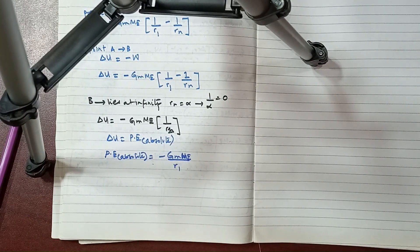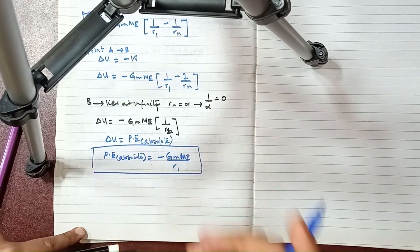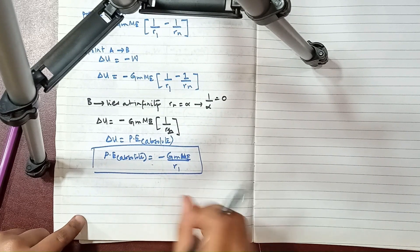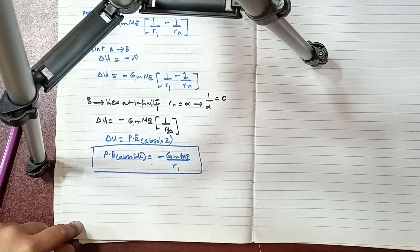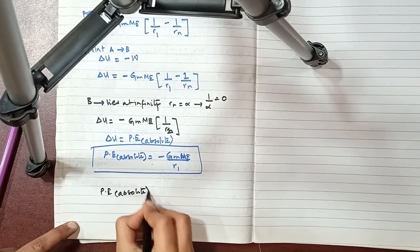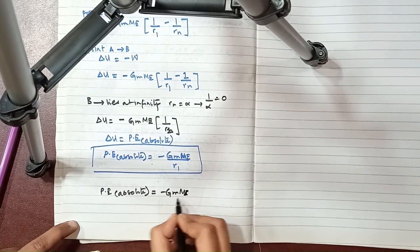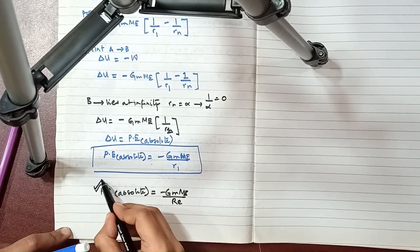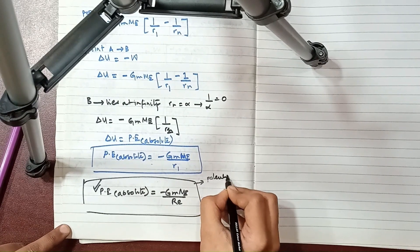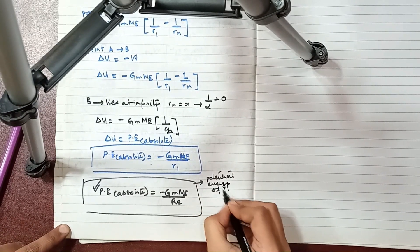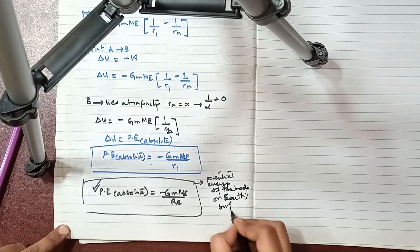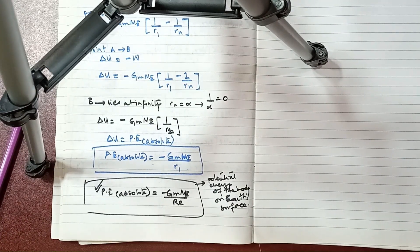Moving on — that was the absolute potential energy. Now if we talk about this in the context of Earth: if r represents the radius of the Earth, then the potential energy at the surface of the Earth is given by the absolute potential energy formula as minus GMₑm / R, where R is the radius of the Earth. That is the potential energy of the body at the surface of the Earth.